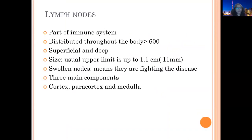Lymph nodes are part of the immune system and they are distributed throughout the body. There are approximately 600 lymph nodes in the body. Depending on the location, they are either superficial or deep, and normal size is up to 1.1 cm. Swollen nodes mean they are fighting disease. The three main components are cortex, paracortex, and medulla.